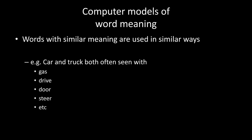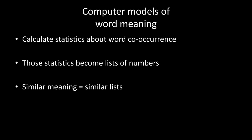To solve analogies, we're going to use computer models of word meaning. These are built on the fact that words that are similar are used in similar ways. So if we were to look through all of the websites on the internet and look for the word 'car' and the word 'truck,' they would probably both be used in similar contexts — both used with the words gas, drive, door, steer, etc. And so that would tell us that they have similar meaning. Computer models of word meaning leverage that fact in order to build models.